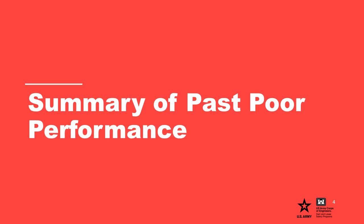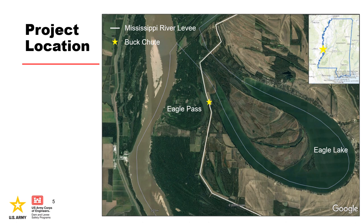First, a quick reintroduction of the project area and a summary of past performance at the levee. Buck Chute is located along the main stem levee system of the Mississippi River and Tributaries Project, 16 miles northwest of Vicksburg, Mississippi. The mainline levee was constructed between Eagle Pass and Eagle Lake, two channel deposits associated with the Mississippi River.